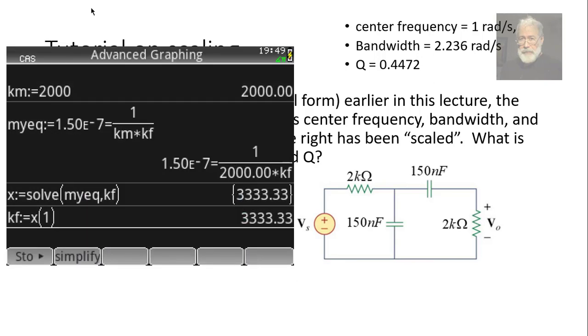My equation is that the new value of the capacitor, 150 nanofarads, and nano is 10 to the negative 9. 150 nanofarads is the old value, 1 farad divided by km and kf, and km is already 2000. The equation has only one unknown kf. I solve for it. I get that kf is 3333. With that, I multiply the old values, and I get the new center frequency, the new bandwidth. The quality factor is the same.